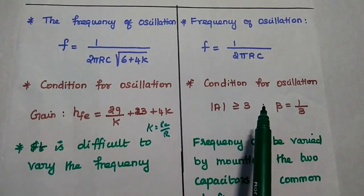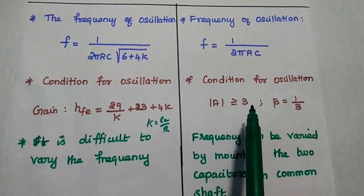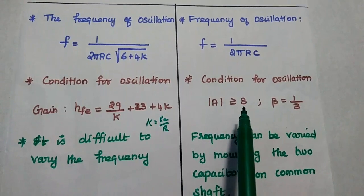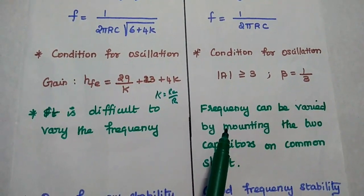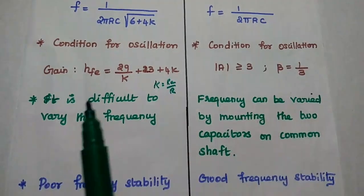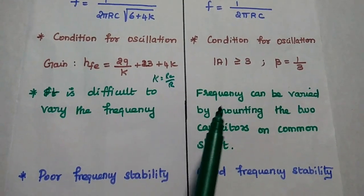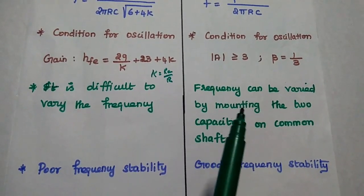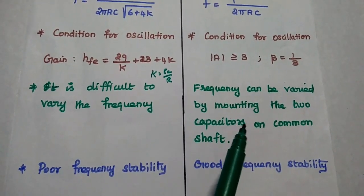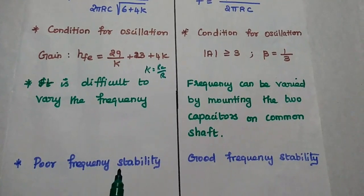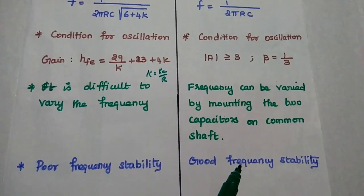In the Wien bridge oscillator, the gain should be greater than or equal to 3 — this is the minimum gain required for oscillation — and the beta value is equal to 1/3. In the RC phase shift oscillator, it is difficult to change the frequency. But in the Wien bridge oscillator, the frequency can be varied by mounting the two capacitors C1 and C2 on a common shaft. The RC phase shift oscillator has poor frequency stability, while the Wien bridge oscillator has good frequency stability.